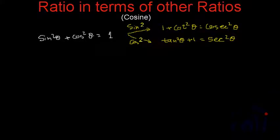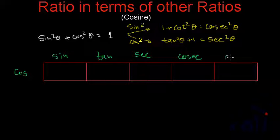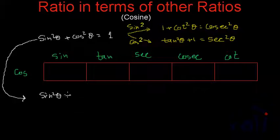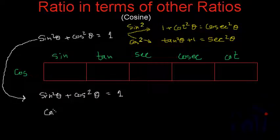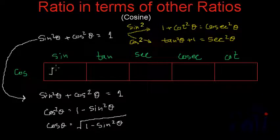Now let me make a table. We are going to convert cos in terms of sine, tan, sec, cosec and cot. From the identity sine squared theta plus cos squared theta equals 1, we get cos squared theta equals 1 minus sine squared theta. So cos theta can be written as square root of 1 minus sine squared theta. So cos in terms of sine is square root of 1 minus sine squared.